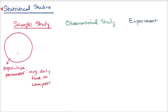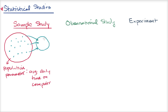You randomly sample people from your population — and there's a lot of thought in whether your sample is truly random, and there are different techniques for random sampling. You take the average daily time on a computer for your sample, and that is going to be an estimate for the population parameter. That's your classic sample study.